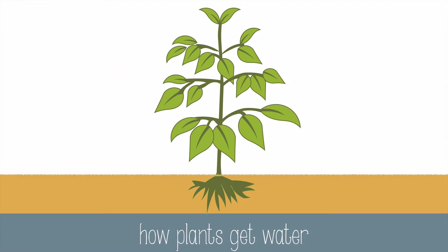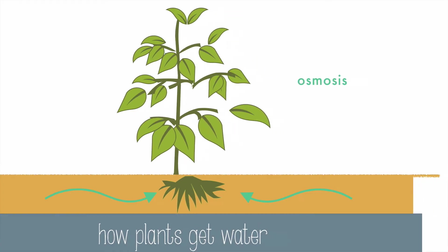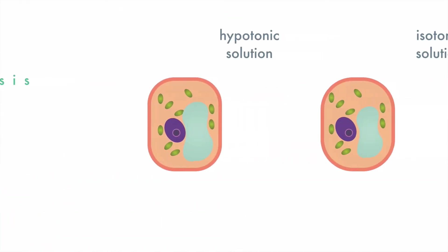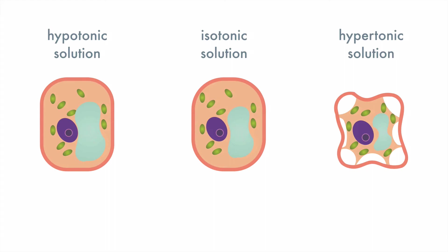Plants really like and need water. They take in water through osmosis in their roots, and they actually prefer to have their cells in a hypotonic solution. Plant cells in a hypotonic solution are turgid and firm and full of water, which is what they prefer.